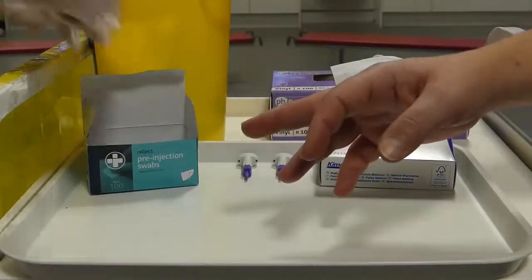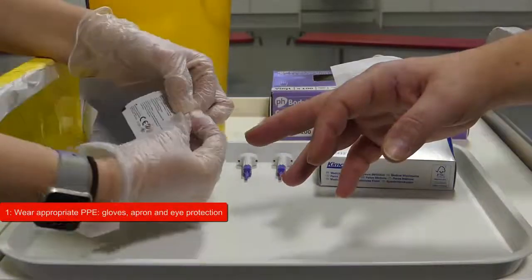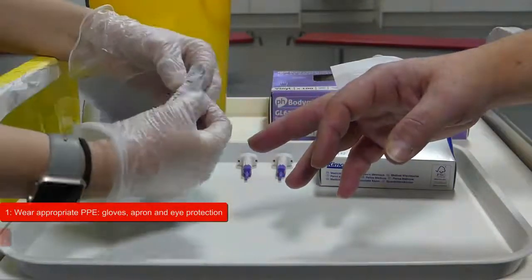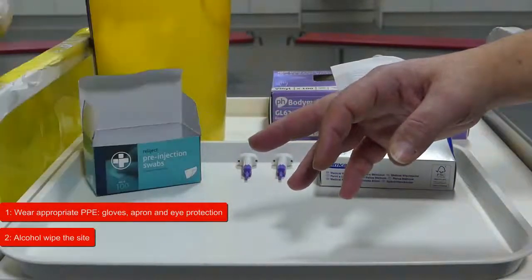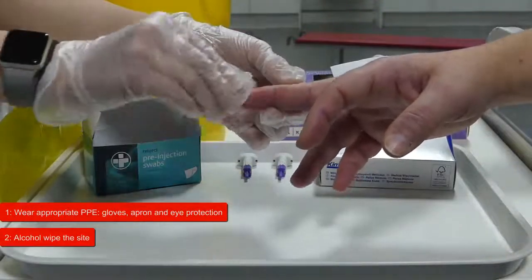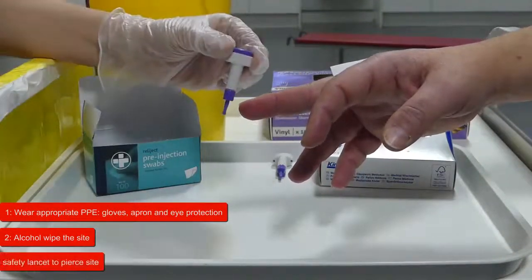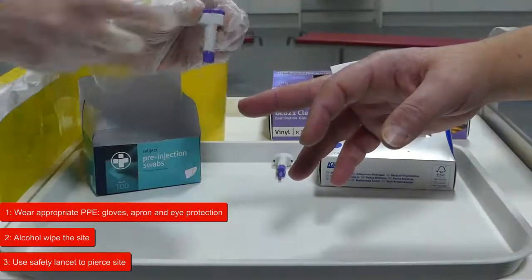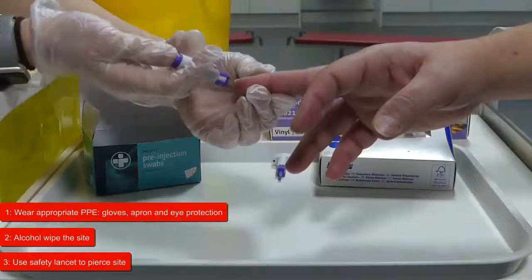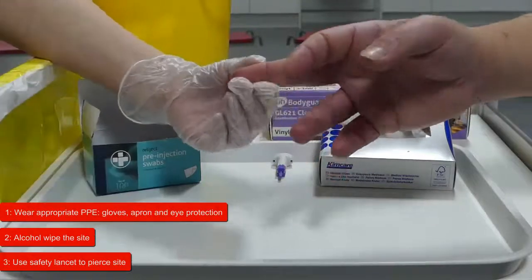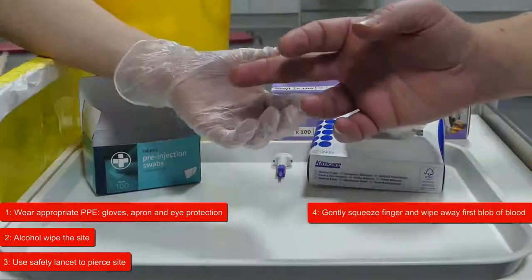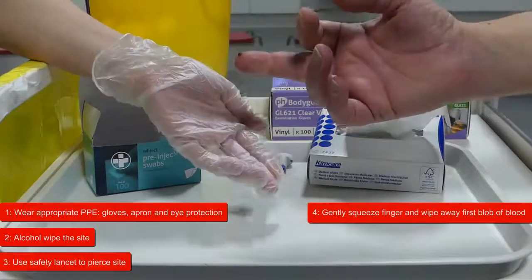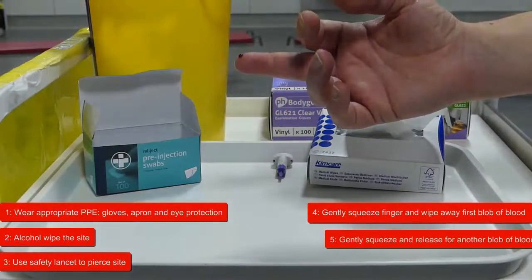We'll watch this again as a quick recap. First ensure you're wearing appropriate PPE. Then alcohol wipe the site. Next using the safety lancet pierce the site. Then wipe away the first blob of blood. Then squeeze and release to milk the site.